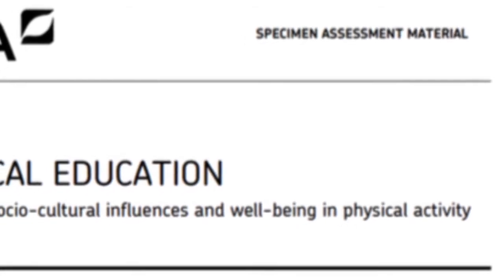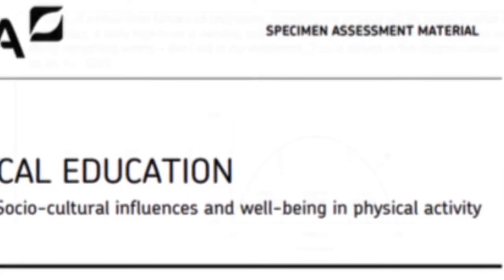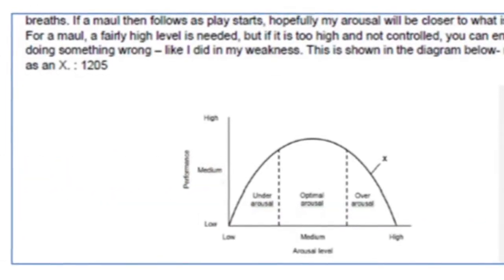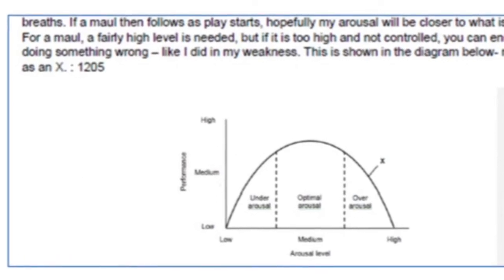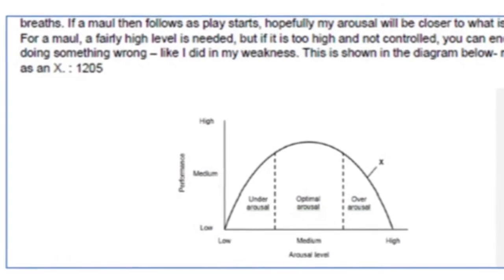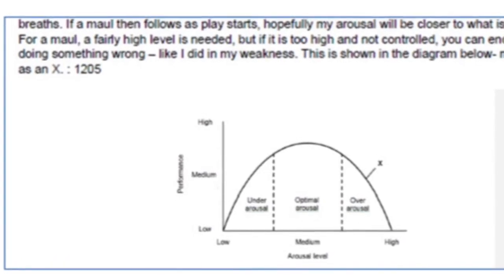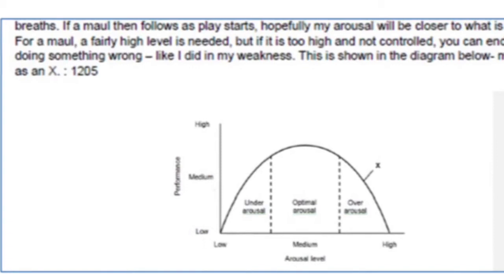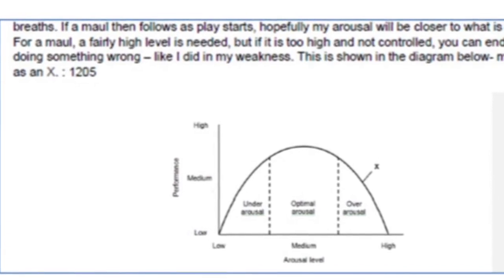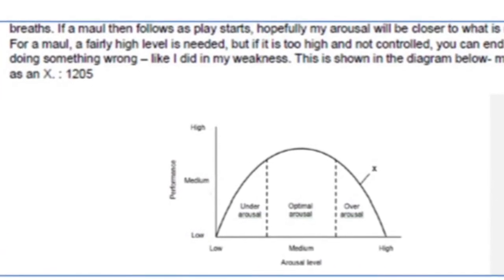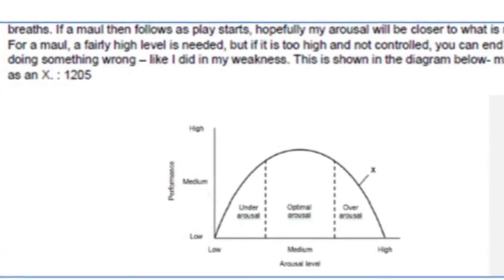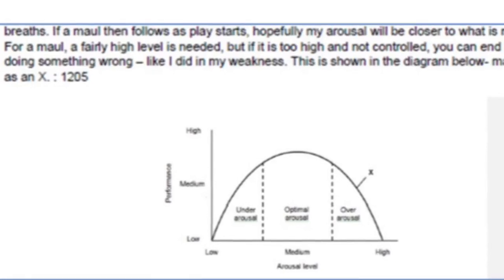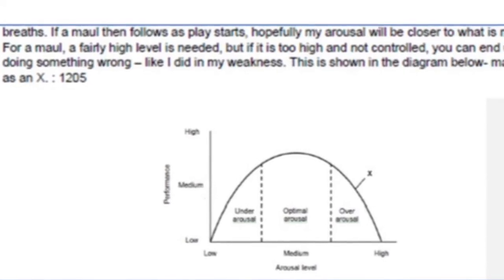The final method of assessment is a coursework assignment. Within your coursework assignment you have to assess and analyse a particular sporting activity, looking at strengths and weaknesses from a physical, practical, and skill point of view, and make your recommendations based on these facts.